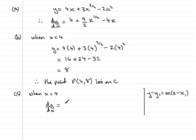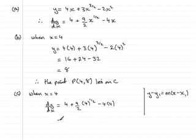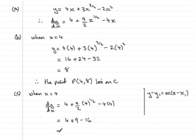So when x is 4, dy/dx equals 4 plus 9/2 times 4 to the power 1/2 minus 4 times 4. Working that out: 4 to the half is the square root of 4 which is 2, and 9/2 times 2 is 9, so that's plus 9, then minus 16. So 4 plus 9 minus 16 comes to negative 3.